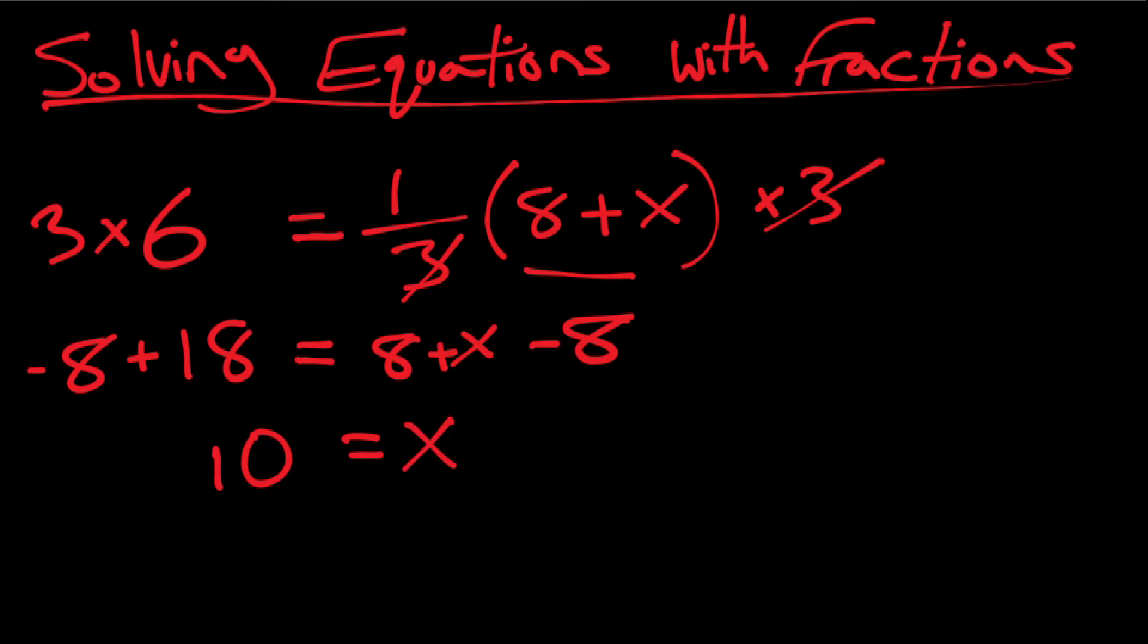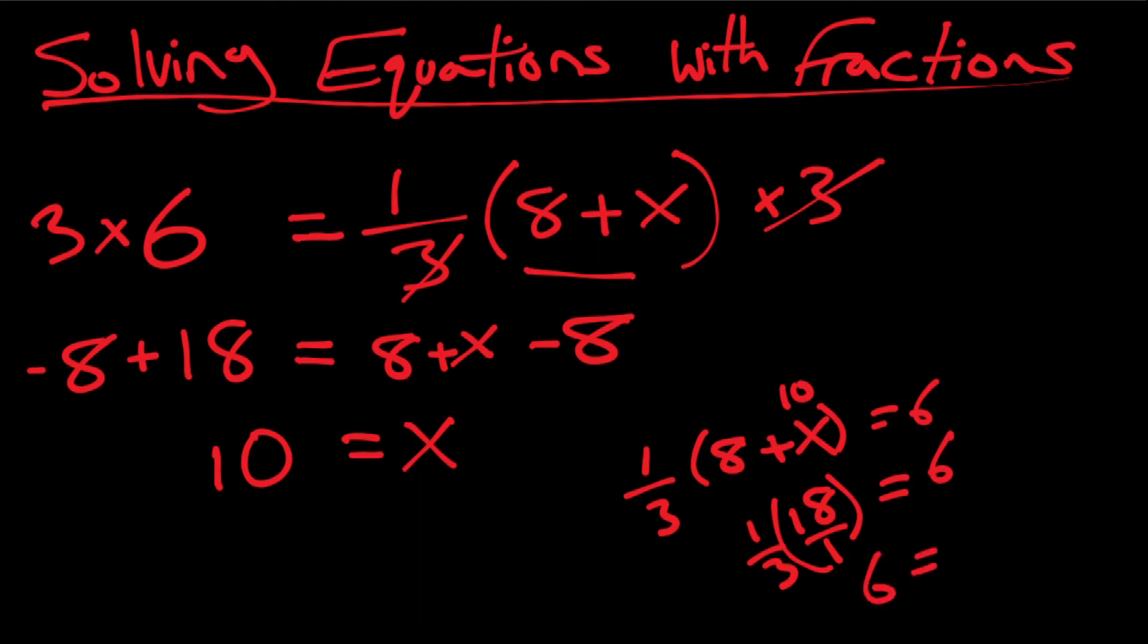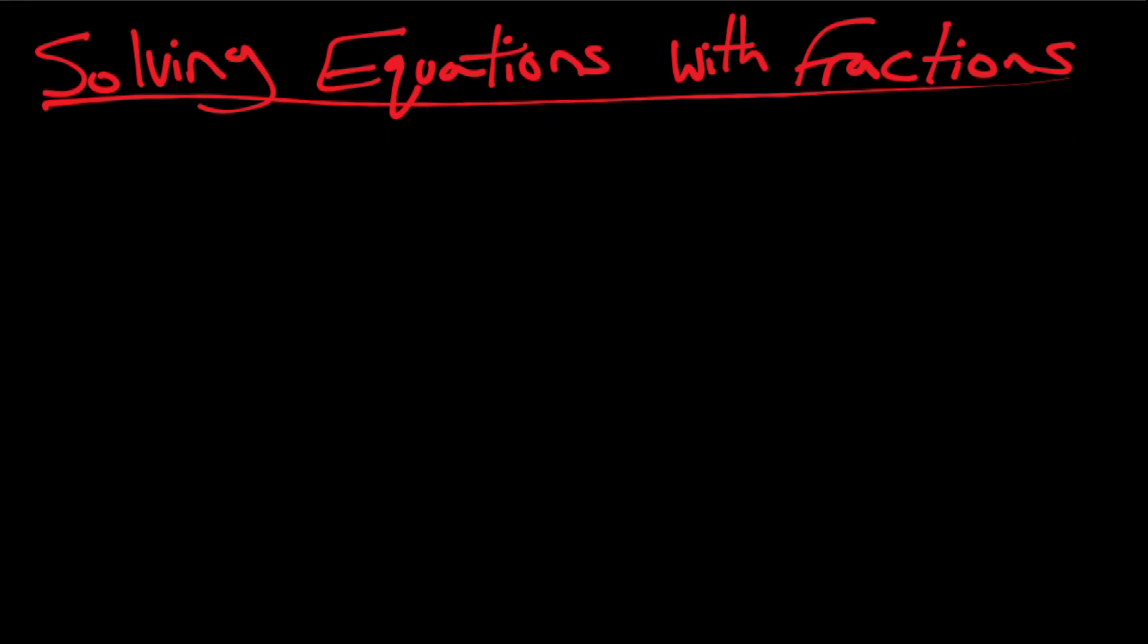So I could, if I wanted to, plug my value of 10 back into the original equation. Then one over three times eight plus x equals six. If I plug 10 in here, that puts me at 18 times one over three, which is basically 18 over three, which is six equals six. So yeah, our math is definitely on point. Let's move on to the next example.